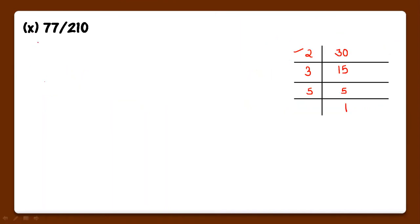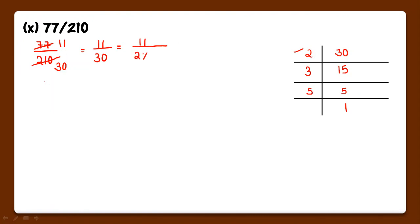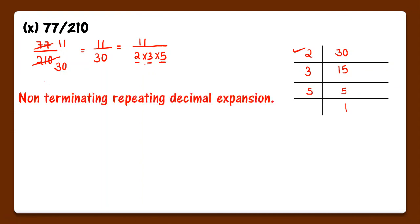Now we will do the last part: 77 upon 210. Dividing both by 7 gives 11 upon 30. Now we do the prime factorization of 30. We can write 30 as 2 into 3 into 5. Now we have 2 and 5 in the prime factorization, but we also have 3. So it is non-terminating repeating decimal expansion.